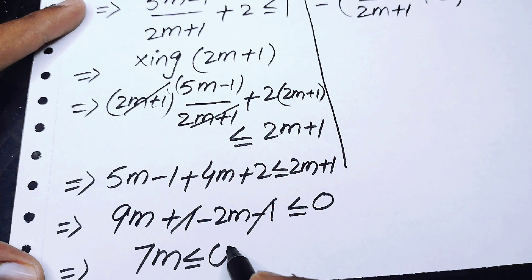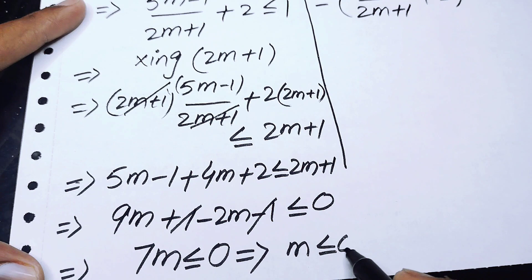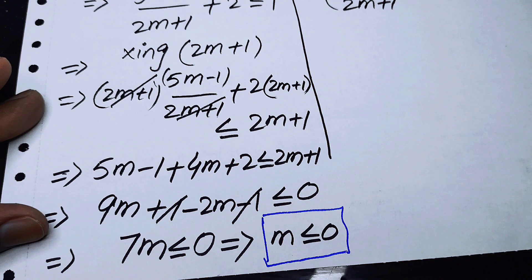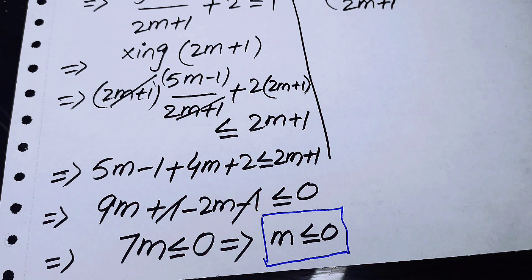From 7m ≤ 0, since 7 is multiplied by m, dividing both sides by 7 gives m ≤ 0. So m ≤ 0 is our first solution.